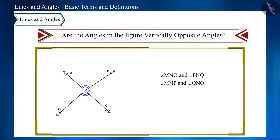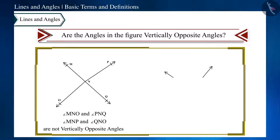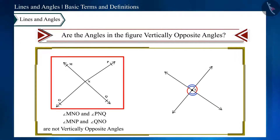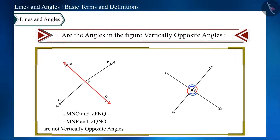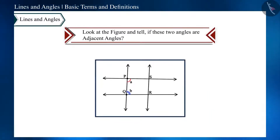Vertically opposite angles are formed when two lines intersect each other. In this figure, two lines are not intersecting — these are two rays, ray PN and ray NO, which arise from point N. Since PN is not a straight line, these angles will not be vertically opposite angles.